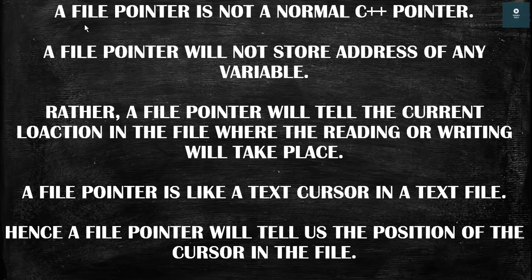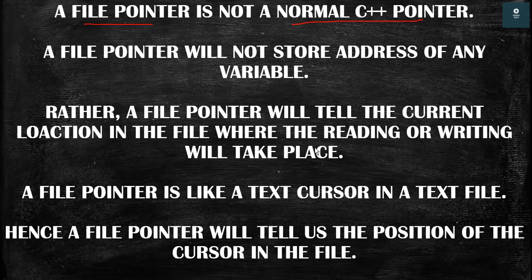A file pointer is not a normal C++ pointer. A normal C++ pointer stores the address of some variable, but a file pointer has a different function. A file pointer tells us the current location in the file where the reading or writing is taking place. To get the exact idea of where we are reading or writing in the file, we can use the file pointer.